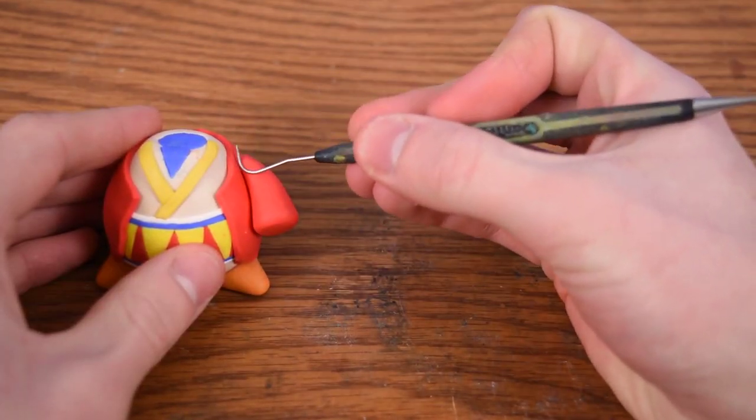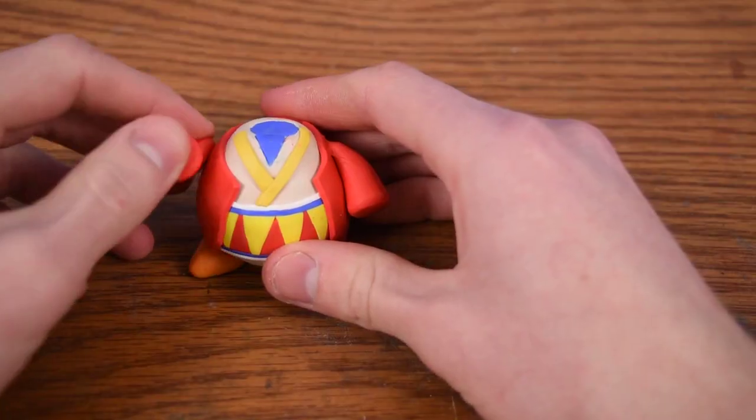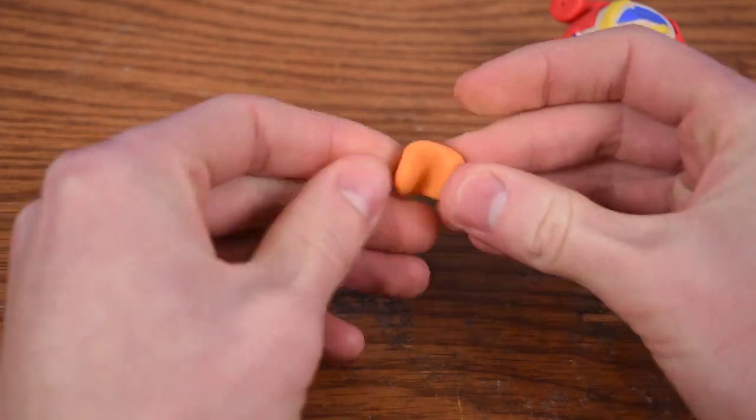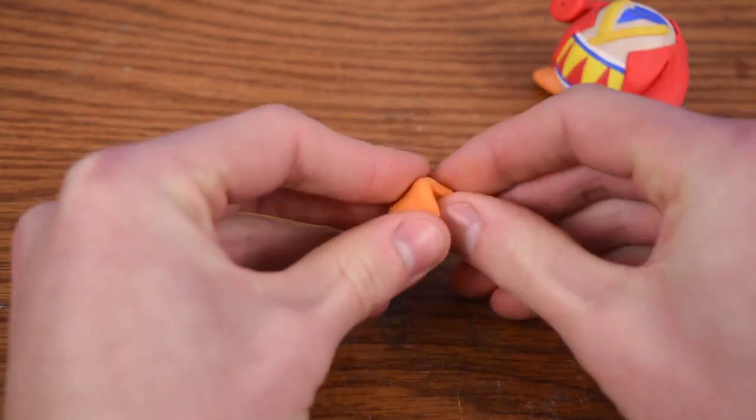Now sometimes I like to use wires inside of the clay figure, but that's usually when the arms are sticking off of the body. For example on this one, they're touching the whole body, so we really don't need wires for it.